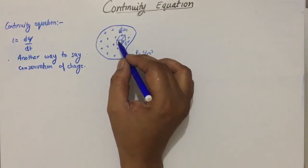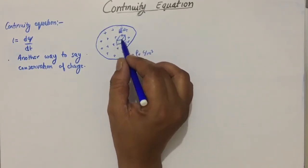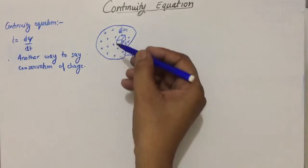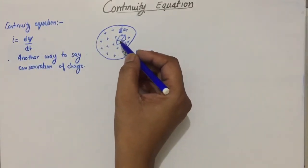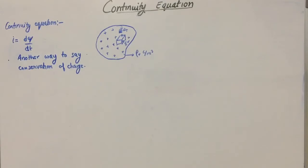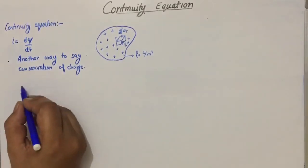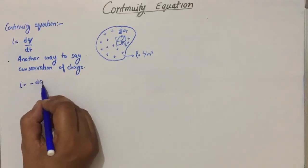If current is flowing outward, then the inside concentration of charge is reduced. Current is nothing but the flow of charge, so if current is moving outward it means the positive charges are moving outward, and inside the concentration of charges is reduced. As the charge flows outward, the concentration of charge inside reduces.